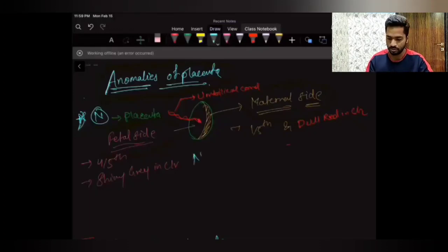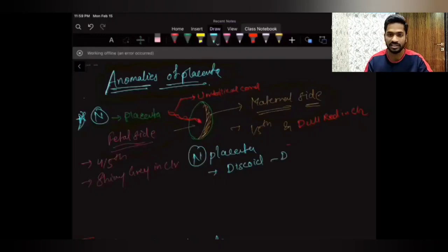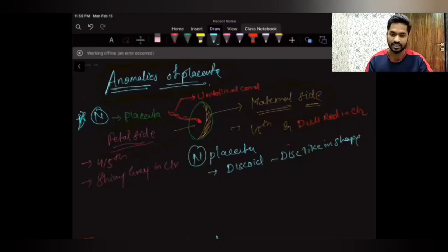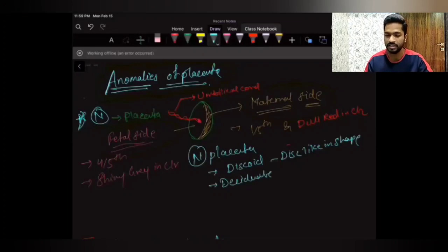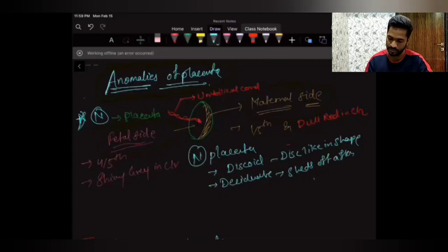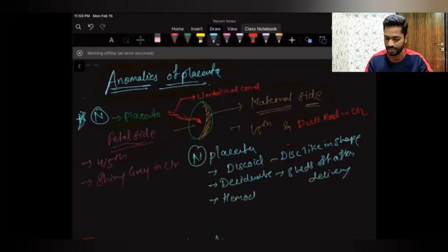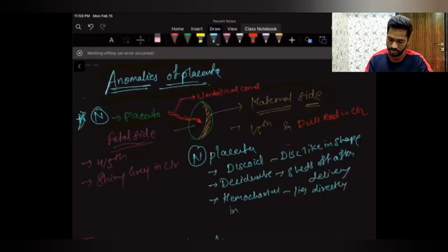A normal placenta is discoid, deciduate, and hemochorial. Discoid means it is disc-like in shape. Deciduate means the placenta sheds off after delivery. Hemochorial means the placenta lies directly in contact with the maternal blood.